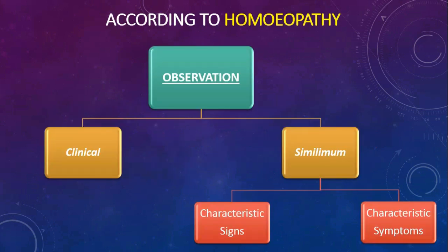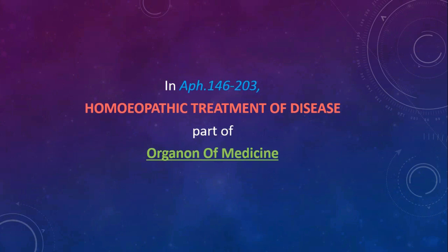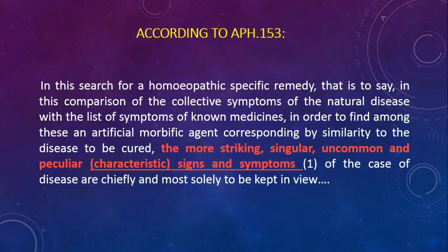According to homeopathy, there are two types of observations: first is clinical — already discussed in the last 3 parts — and second is similimum, which contains two sub-types: first is characteristic signs and second is characteristic symptoms. In aphorism 153, Dr. Hahnemann said: in this search for a homeopathic specific remedy, the most striking, singular, uncommon and peculiar characteristic signs and symptoms of the case of disease are chiefly and most solely to be kept in view.